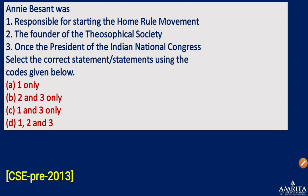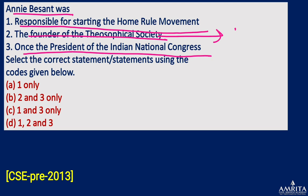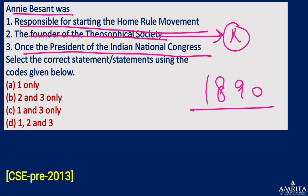Solving a sample question on Annie Besant: she was responsible for starting the Home Rule League movement — correct. She was not the founder of the Theosophical Society — she only joined it in 1890. She was once the president of the Indian National Congress — correct. So the correct options in such a question would be statements one and three.